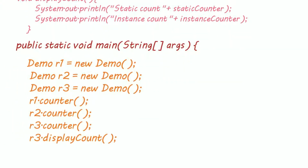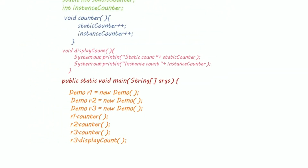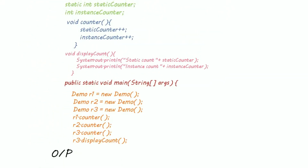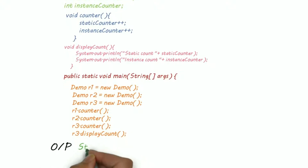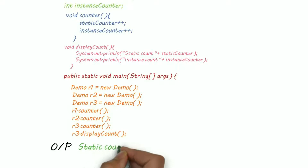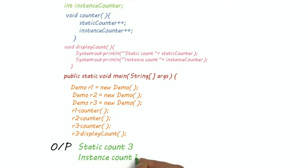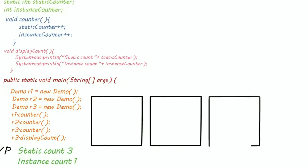Inside our main method I have created three objects r1, r2, and r3 of class demo. These objects call the counter method. At the end, the display count method is called by the third object and it displays the values. Can you guess the output? The value in static variable is 3 and in instance variable is 1.